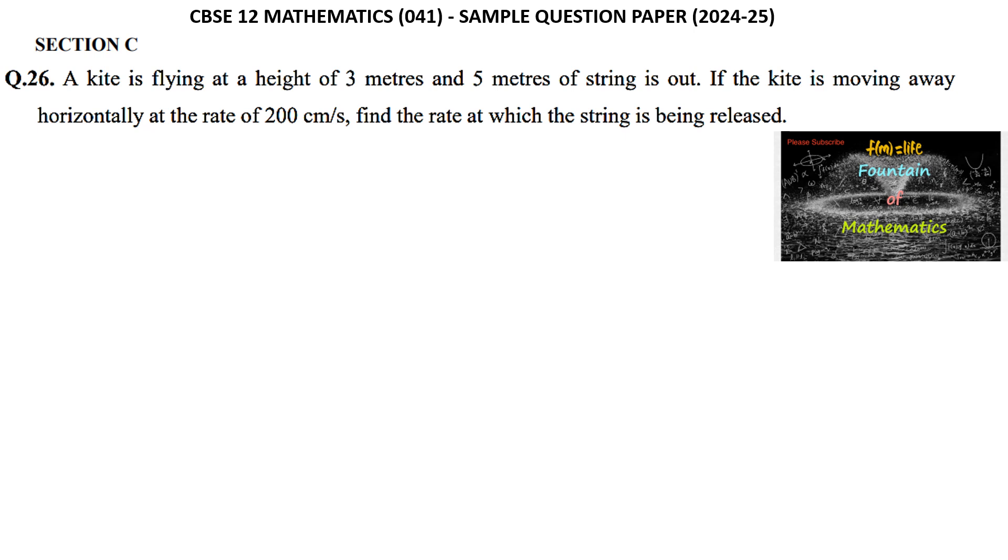Given: a kite is flying at a height of 3 meters and 5 meters of string is out. If the kite is moving away horizontally at the rate of 200 centimeters per second, find the rate at which the string is being released.